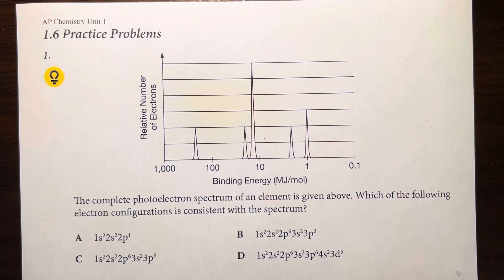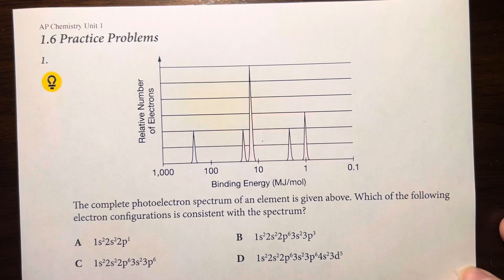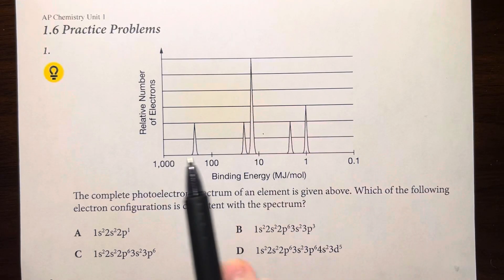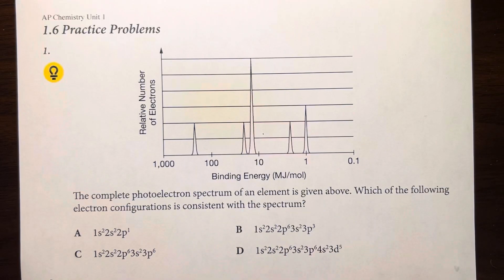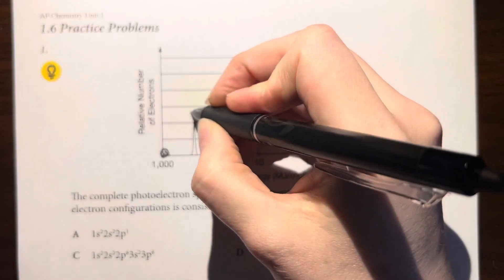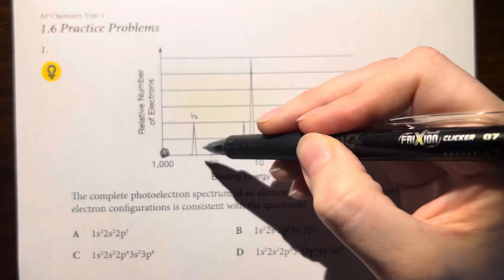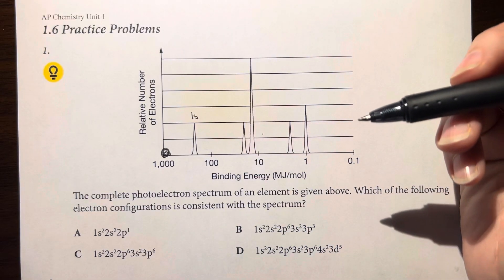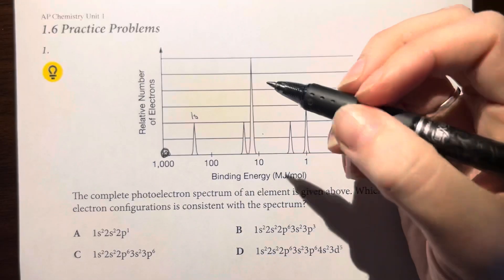1.6 practice problems. The complete photoelectron spectrum of an element is given above. Which of the following electron configurations is consistent with this spectrum? An important thing to note about photoelectron spectrums is that the x-axis is reversed from what we typically see — the largest number is in the bottom left-hand corner, progressively getting smaller. The nucleus is at this axis, so the electrons closest to the nucleus are the 1s electrons. The spikes are proportional to how many electrons are within each energy level and sublevel.